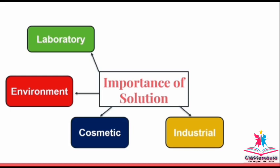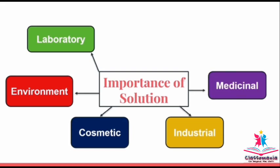Next importance is industrial. Cleaning solutions, concentrated and diluted solutions — different types of solutions are used in industries. Next is medicinal. For example, one part per million fluoride ion prevents tooth decay. 1.5 ppm causes discoloration of teeth, and higher concentration can be used as poison also.